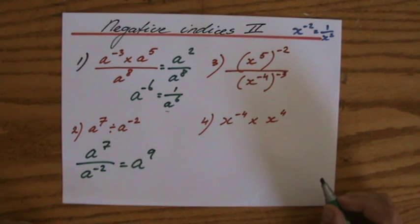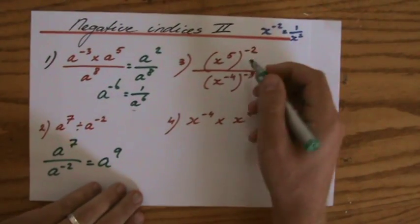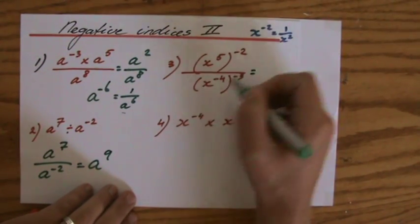How much is 7 minus minus 2? That is a to the power 9. Careful there - subtracting a negative, you're actually adding.